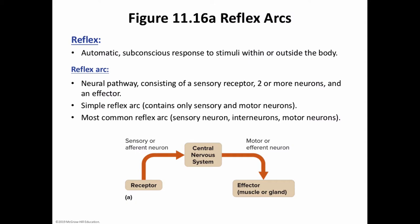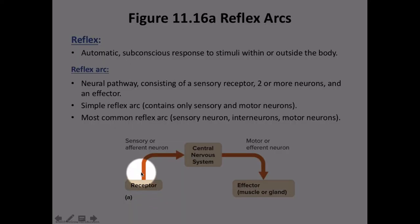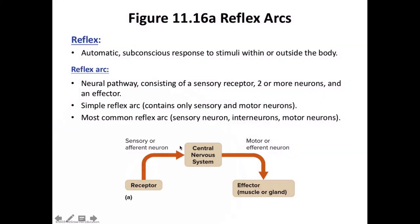A reflex is nothing more than a sensory receptor and an effector. You can look at what's being shown here, and you'll find that same figure in your textbook on page 413, figure 11.16A. There is the receptor; by way of that receptor, sensory information is sent along the afferent pathway to the sensory nervous system, and thereafter along the efferent pathway to a motor neuron, reaching some effector or gland.